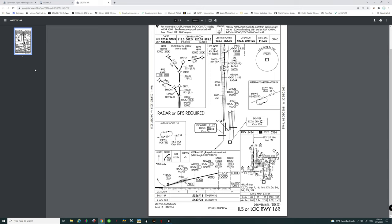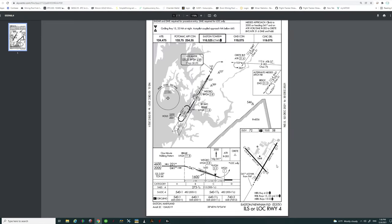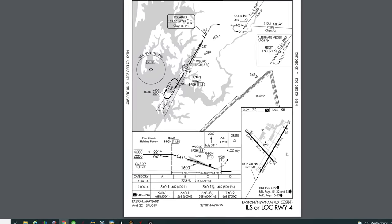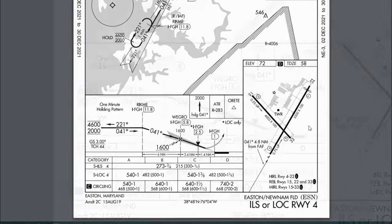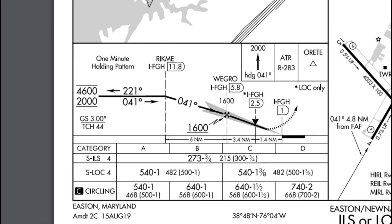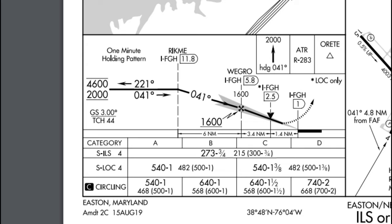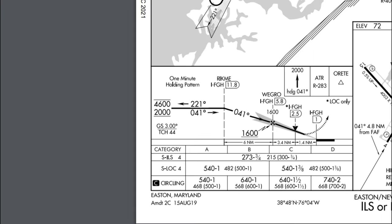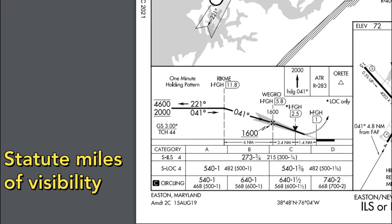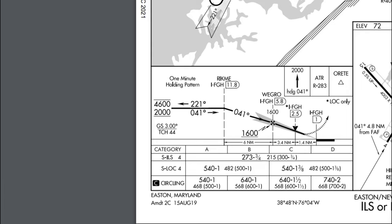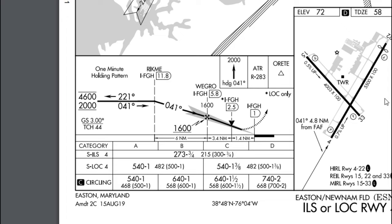Now let's take a look at another ILS chart with some different figures at the bottom — this is for Easton, Maryland, covering the ILS runway 4, the localizer 4, and the circling approach. The ILS is the precision approach; the localizer and circling approach are both non-precision. Looking at the ILS runway 4, we see 273 followed by a dashed line and three-quarters. This is not an RVR value — it is statute miles of visibility. So at a decision altitude of 273 feet we need three-quarters of a mile of visibility to proceed on the approach. Next to that is the decision height as an AGL level, plus figures in parentheses used by the military.